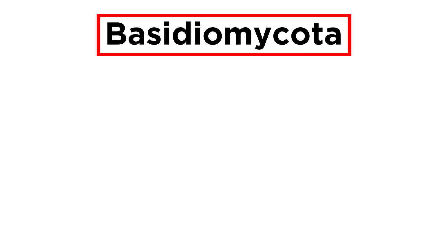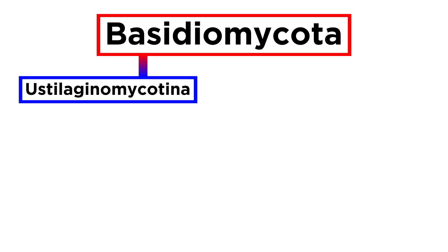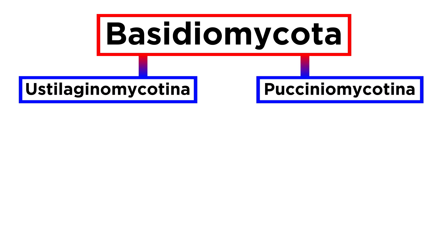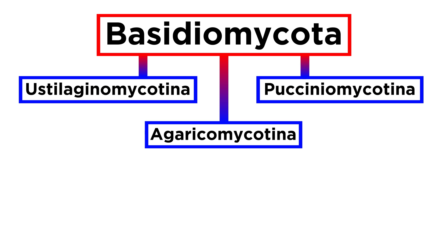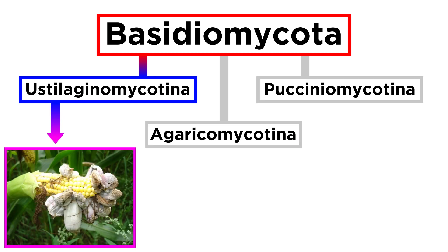Currently, within Basidiomycota, there are three subphyla. Those are Eustilaginomycotina, Pucciniomycotina, and Agaricomycotina. Let's first examine fungi within the subphylum Eustilaginomycotina.